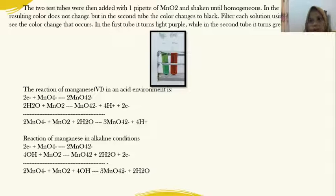In the first tube, the resulting color does not change, but in the second tube, the color changes to green. Filter each solution using filter paper and see the color change that occurs. In the first tube, it turns light purple, while in the second tube, it turns green.